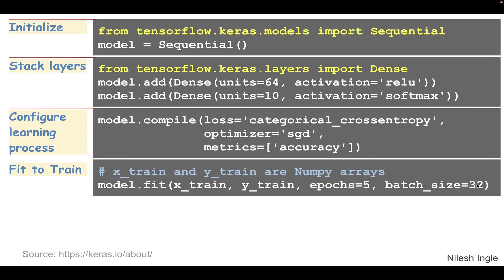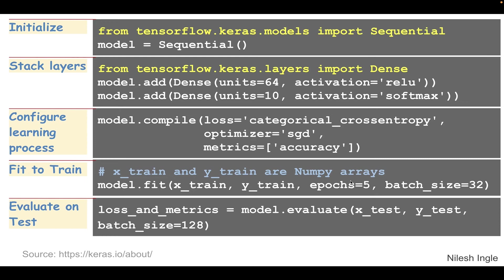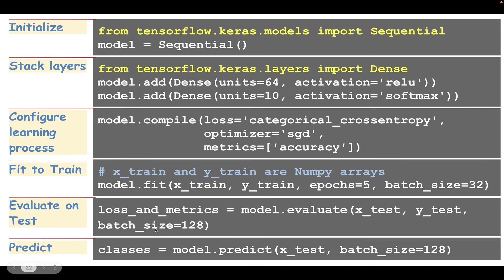Finally, we use the compiled model to fit on the training data. We can specify the batch size and number of epochs. We evaluate the learned model on the test dataset by calling model.evaluate, again specifying the batch size. Once the model is evaluated and we are happy with the metrics, we can use the final model to create predictions using model.predict. That is the set of code in Keras we would be using to create models for solving deep learning problems.